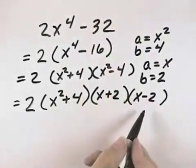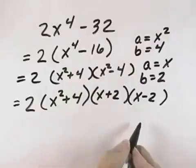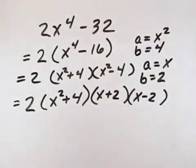And now none of these four factors can be broken down any further, so that the four factors together would be the completely factored form of 2x to the 4th minus 32.